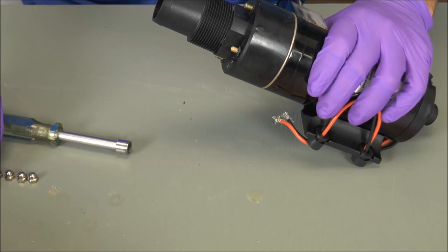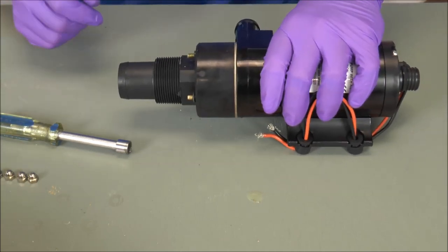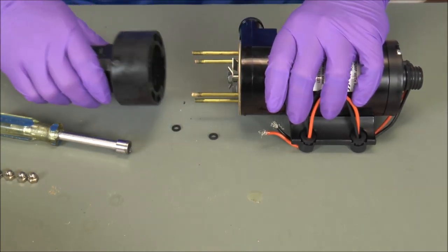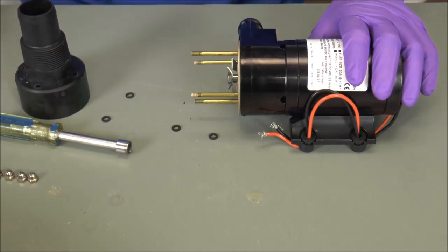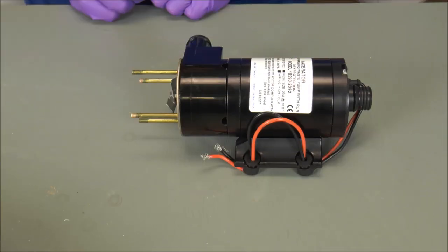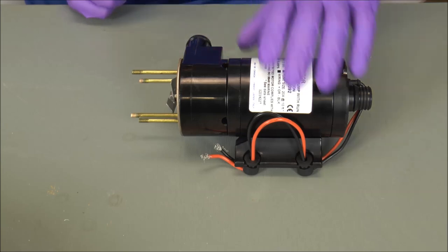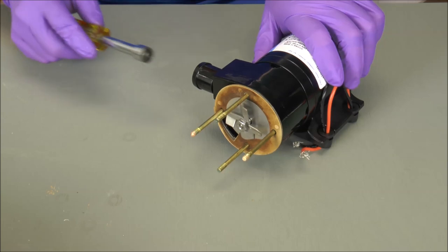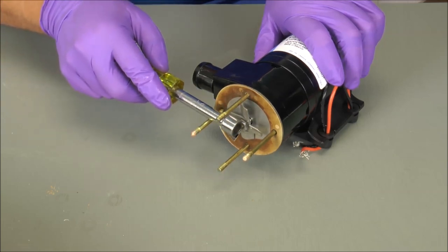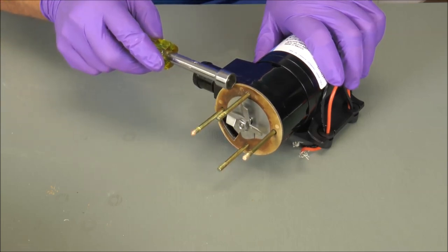Now that the four acorn nuts are off, we can go ahead and slide off that macerator housing. So now that we have the macerator housing, the acorn nuts, and the fiber washers off, our next step is going to be taking off the chopper blade, the lock nut, the two paper gaskets, and the large wear plate off.